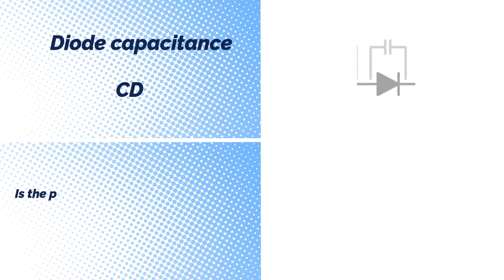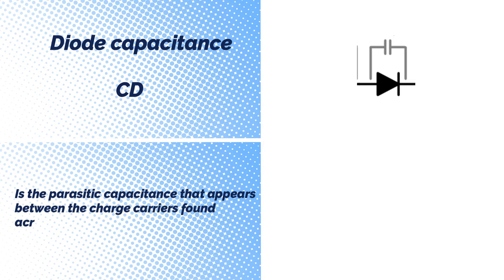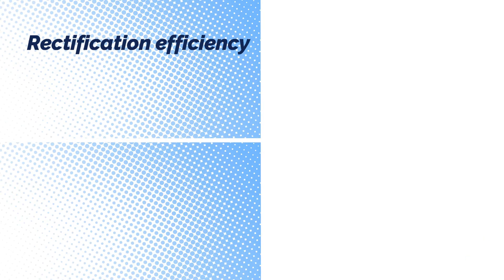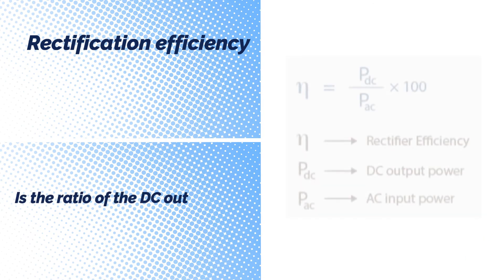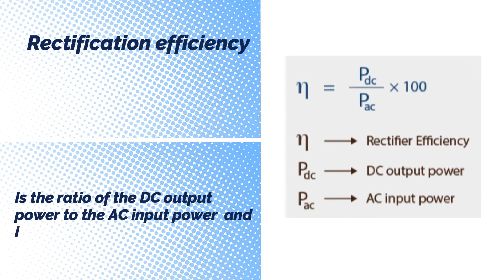Diode Capacitance is a parasitic capacitance that appears between the charge carriers found across the junction of the diode. Rectification efficiency is the ratio of the DC output power to the AC input power and it is expressed in percentages.